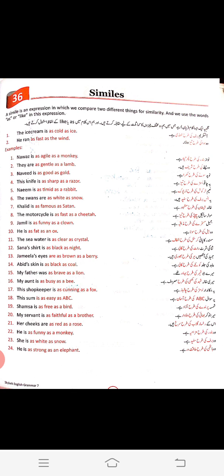Here are more examples: 'as agile as a monkey,' 'they are as gentle as a lamb,' 'it is as good as gold,' 'the knife is as sharp as a razor,' 'as timid as a rabbit,' 'as white as snow.' You can see the examples compare two unlike or different things with each other — that is called a simile.